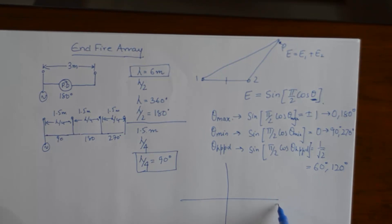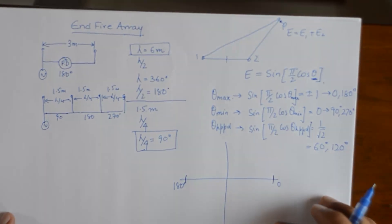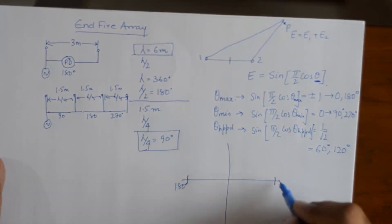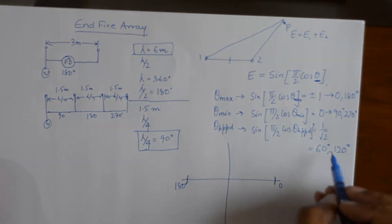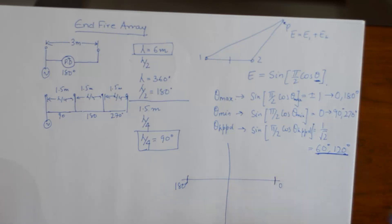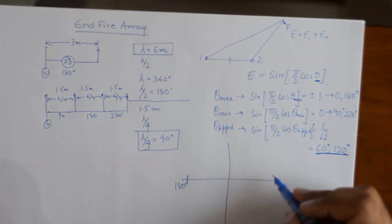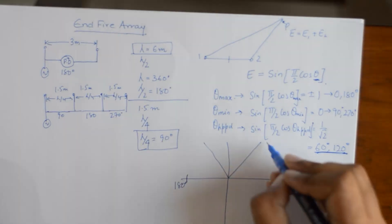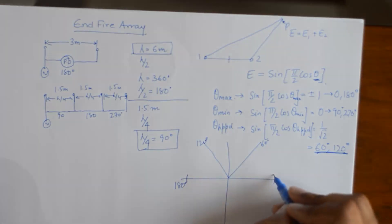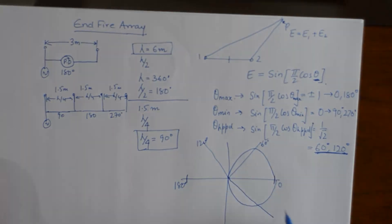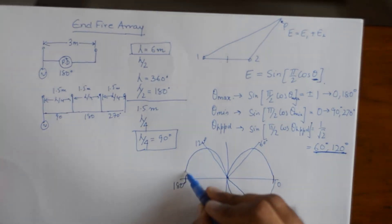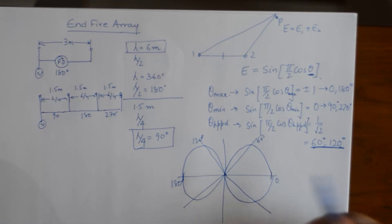So this time around the maximas are at 0 and 180 degrees. So we will try to draw our major lobes at 0 and 180 degrees. But we need to remember that the major lobes should pass the half power point distributions. So if we draw angles of 60 degrees and 120 degrees, our major lobe should pass through 60 degrees and 120 degrees in the other quadrant.